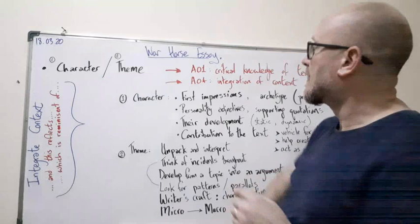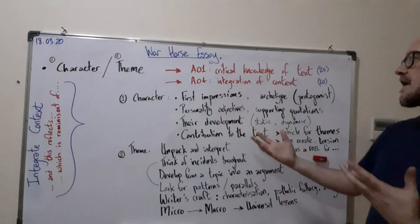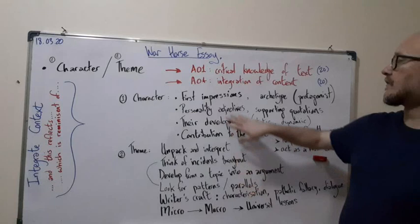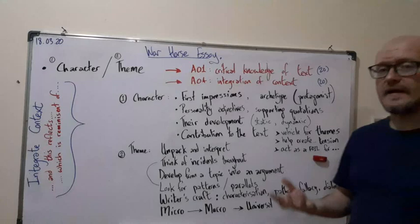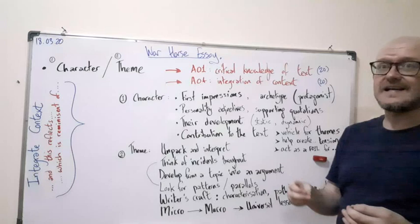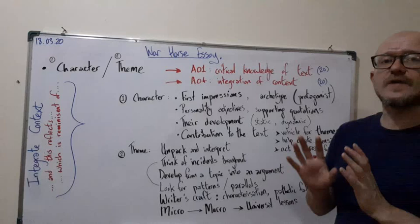Let's get down to your choices. It's normally either a character essay or a thematic essay. We'll look at character first. So for character, let's take a character—Albert's dad, Ted Narcott. With any character, you can see the first impressions of that character and what kind of role they play, what archetype are they. Are they a protagonist, the central main hero of the novel? Are they an antagonist, there to cause conflict? Are they a supporting character? There's a whole range of archetypes, types of characters and roles that people fulfill in novels.